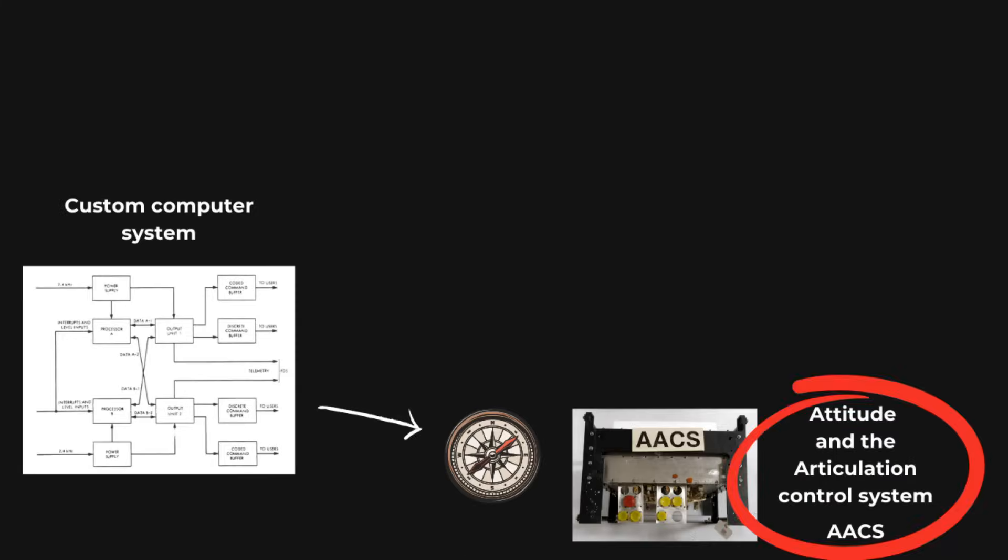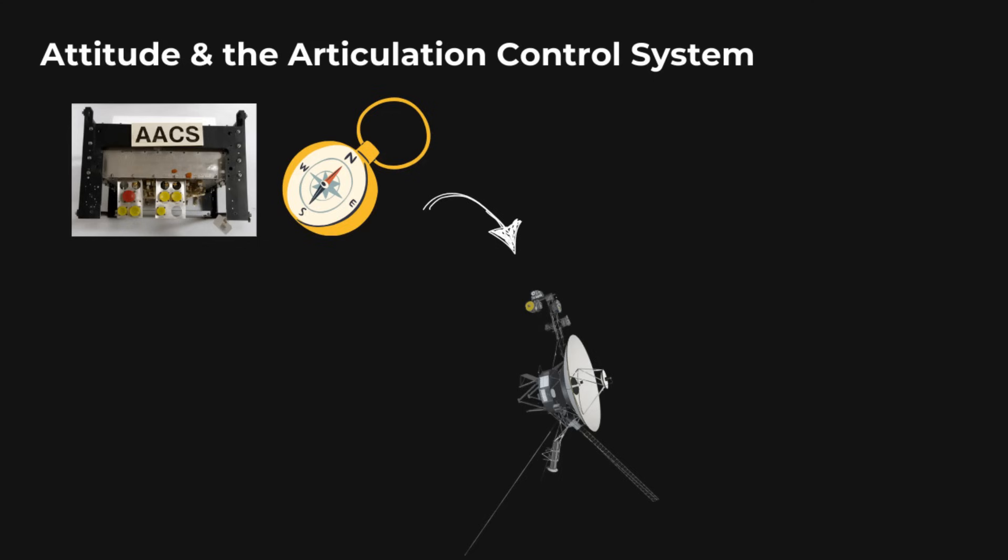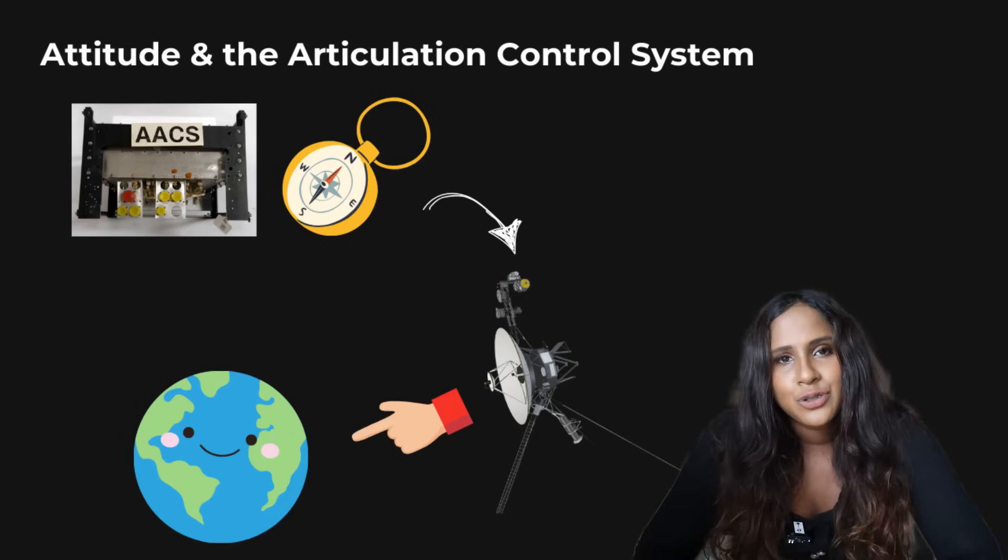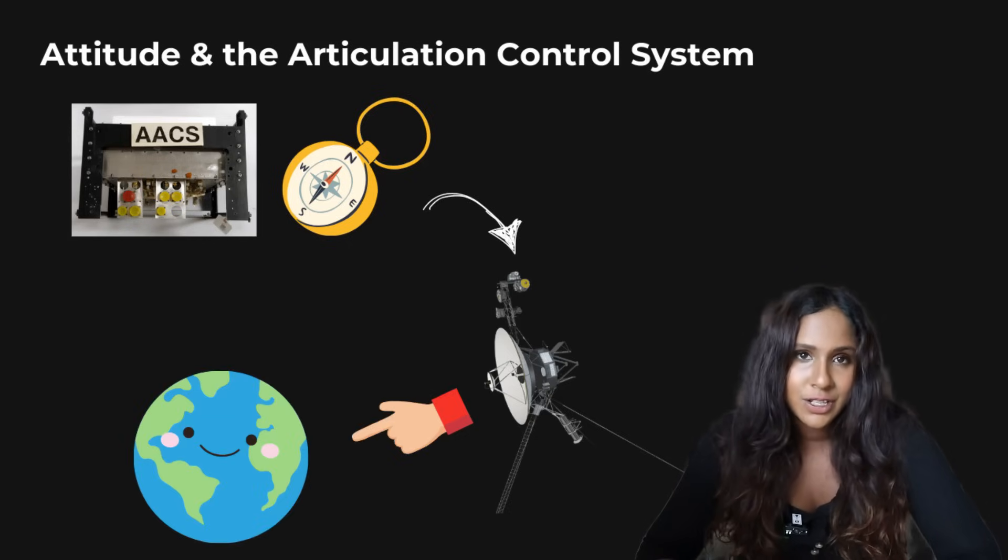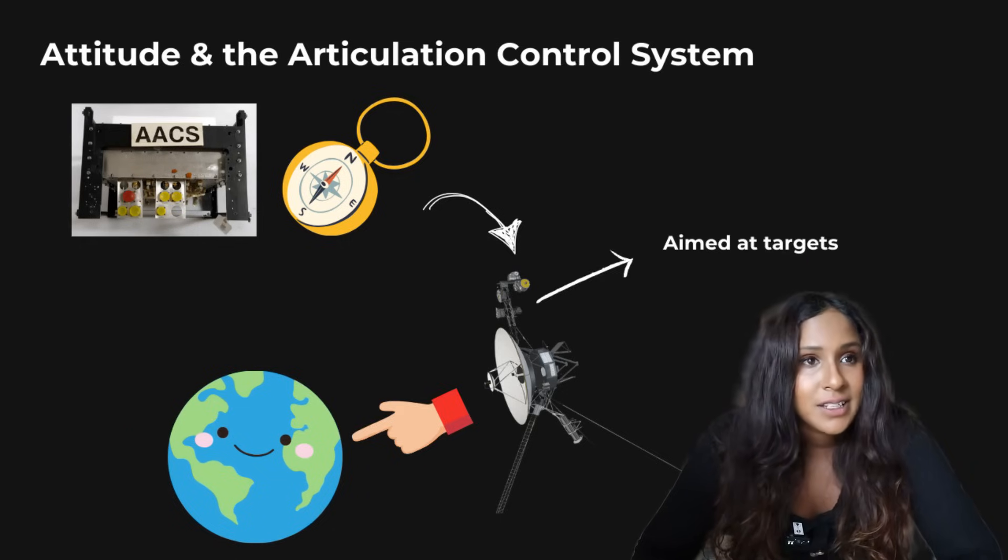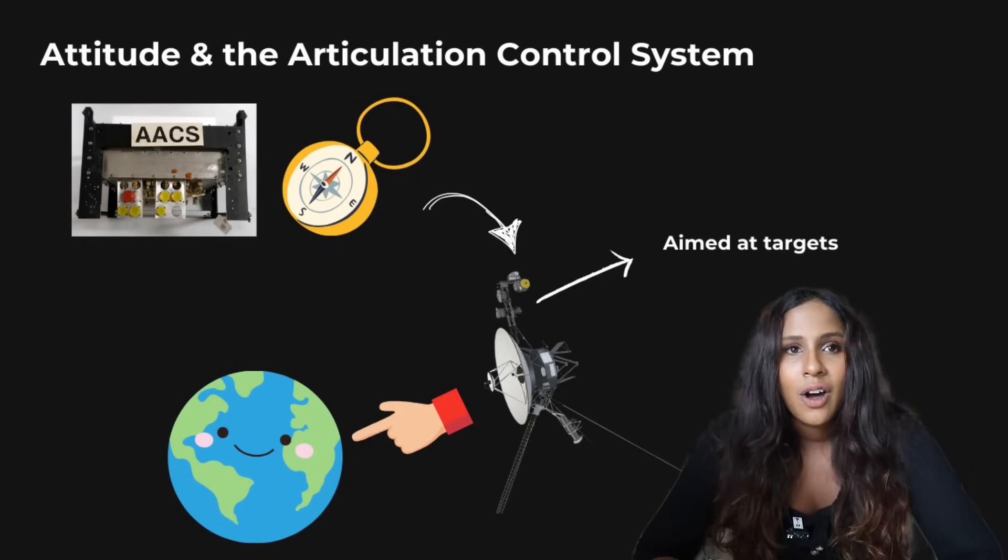And lastly, you get the attitude and articulation control system. And this is Voyager's navigator. It controls the spacecraft's orientation, and it ensures that the high-gain antenna is always pointed to Earth for communication. It also ensures that the scientific instruments on board are accurately aimed at their targets.